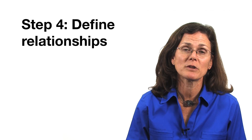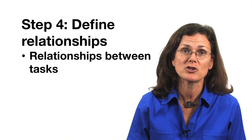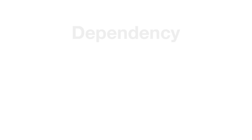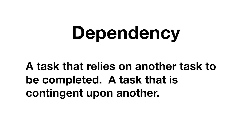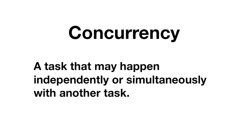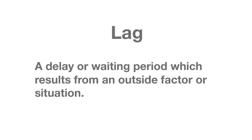Step four is to define relationships between the tasks on your list. Some of these relationships might be concurrencies, dependencies, or lags. A dependency occurs when there's a task that cannot be started before another one is completed. Dependencies occur several times in this Gantt chart everywhere that wood must be cut before it is used to build a structure. A concurrency refers to tasks that are independent of one another and thus may occur simultaneously — for example, ordering materials at the same time that we're planning for the building process. A lag is a delay or waiting period which results from an outside factor or situation, and you need to include these time lags in your Gantt chart. For example, after you order supplies, there will be a several-day time lag before these supplies arrive and are ready to be used in your project.